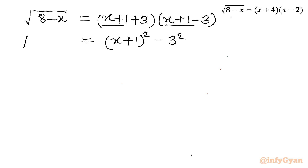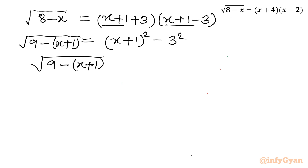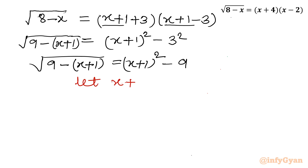On the left hand side, 8 minus x can be rewritten as 9 minus (x plus 1). So the equation becomes: square root of (9 minus (x plus 1)) equals (x plus 1) squared minus 9. Now I will use substitution — let x plus 1 equal y. The equation becomes: square root of (9 minus y) equals y squared minus 9.